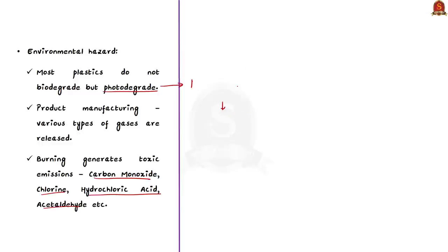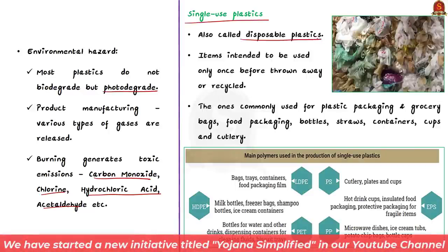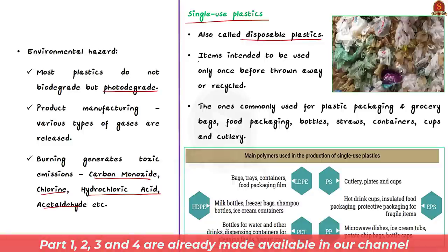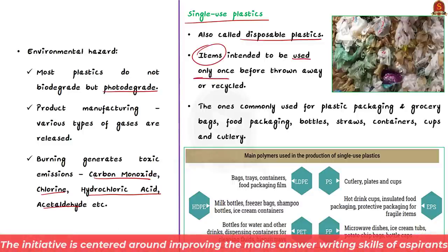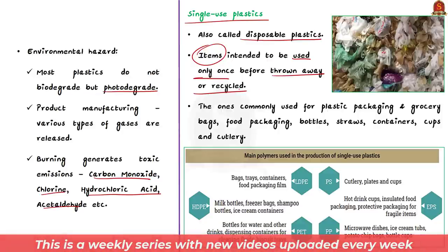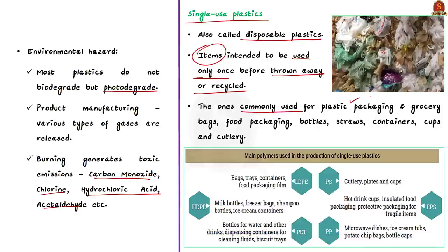The environmental problem is further multiplied by the use of single-use plastics, also called disposable plastics. These include items intended to be used only once before being thrown away or recycled — commonly used for plastic packaging — including grocery bags, food packaging, bottles, straws, containers, cups, and cutlery. These single-use plastics end up in the environment and majorly damage it as they are petroleum-based polymers.